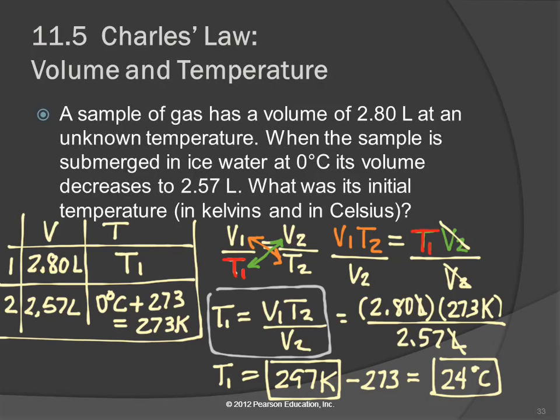Does the answer make sense? We took a sample of gas, you can imagine it being a balloon, and put it in ice water. The volume went down. So that tells us that the original temperature must have been higher than zero, right? Because when the volume goes down, that means that the temperature went down. So here 24 is higher than zero, and so that's good.